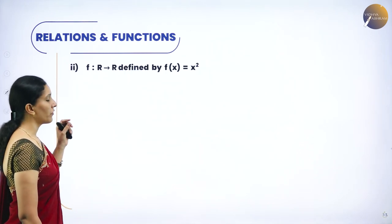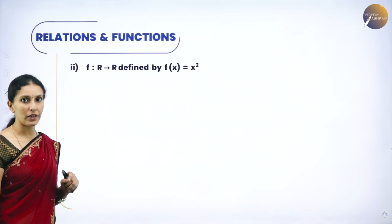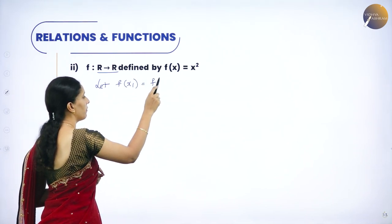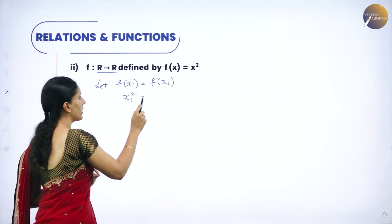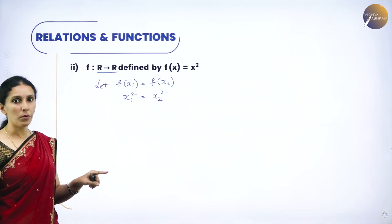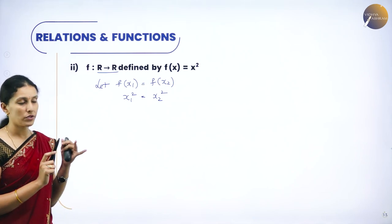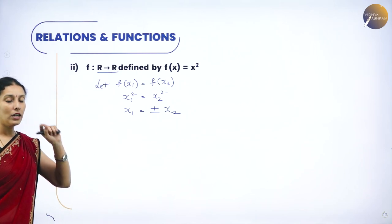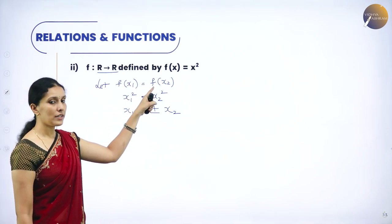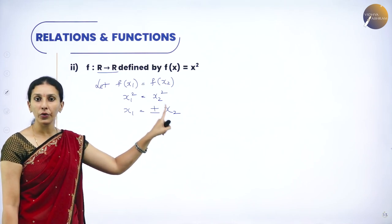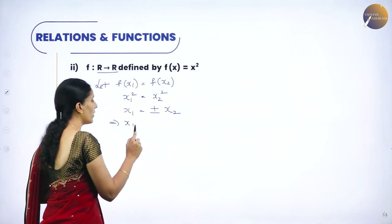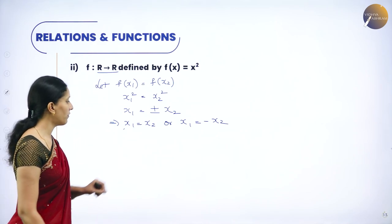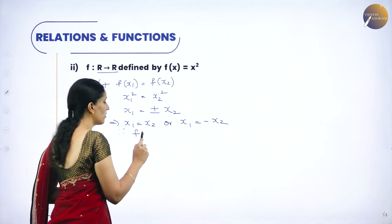Next, f: ℝ → ℝ defined by f(x) = x². For injectivity, let f(x₁) = f(x₂), giving x₁² = x₂². Since this is the set of real numbers, square roots have both positive and negative values, so x₁ = ±x₂. That is, x₁ = x₂ or x₁ = −x₂. Two conditions arise, which is not allowed for one-one. Therefore, f is NOT one-one.